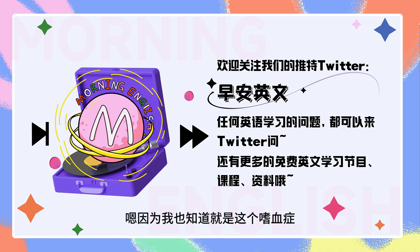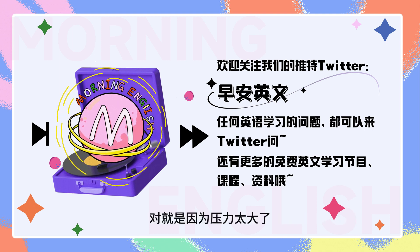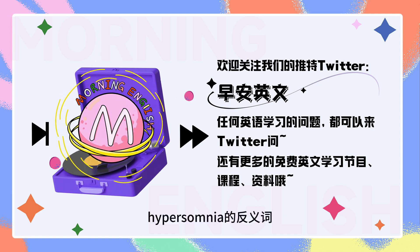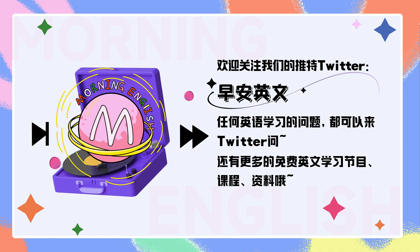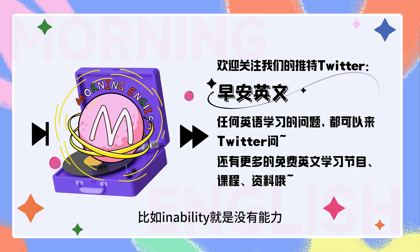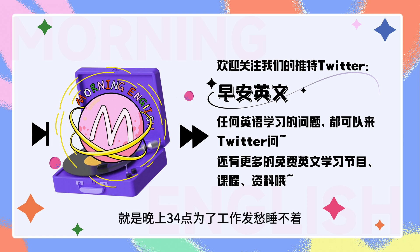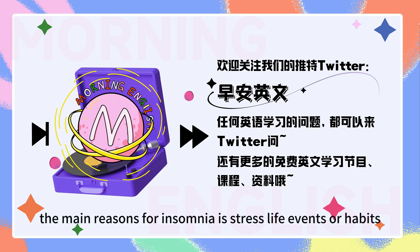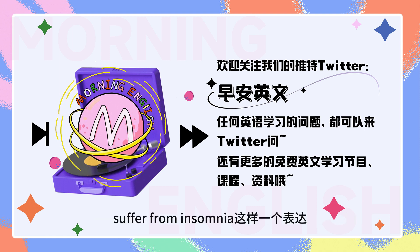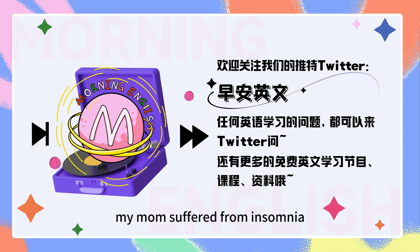不过你奶奶其实不一定是嗜睡症。嗯，因为嗜睡症，it is mostly a brain and a psychological disease，right？对，就是因为压力太大了，一种心理疾病。那我也知道另外一种病，它其实是hypersomnia的反义词。Do you mean insomnia？对，失眠症。Insomnia就是在somnia前面加了个否定的前缀，比如inability。The main reasons for insomnia is stress, life events or habits. 如果你受这个失眠症的困扰，我们可以用到suffer from insomnia。比如my mom suffered from insomnia.